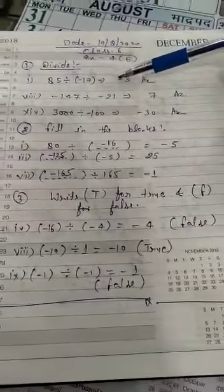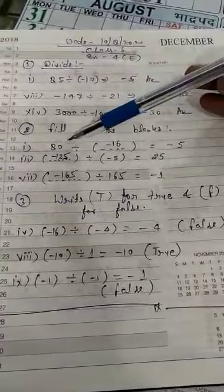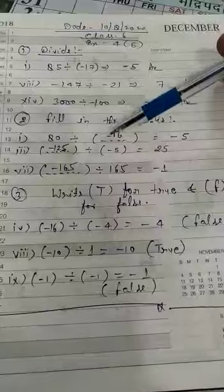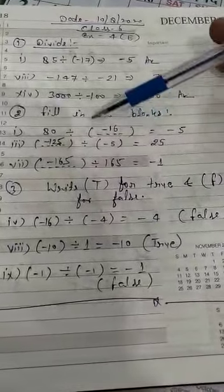Next question number 2, fill in the blanks. Yahan pe 80 ko hame kis number se divide kare ki answer minus 5 aata. So 80 ko hame minus 16 se divide karayenge. 16 fives are 80 hota hai. Plus minus minus ka, so 5 aayega, minus 5.